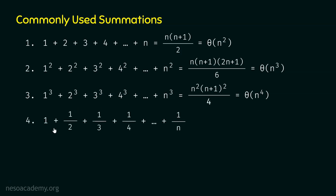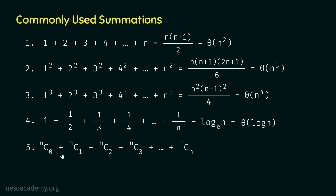The fourth summation is 1 plus 1/2 plus 1/3 plus 1/4 up to 1/n, which equals log n base e and is therefore theta of log n — we do not need to worry about the base in asymptotic notation. The fifth summation is nC0 plus nC1 plus nC2 plus nC3 up to nCn, where C represents the combination from permutations and combinations. This summation equals 2 power n, which is theta of 2 power n.